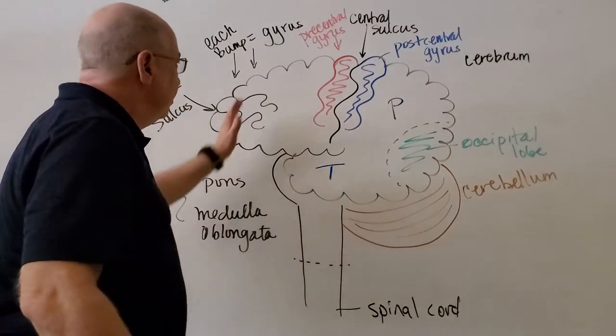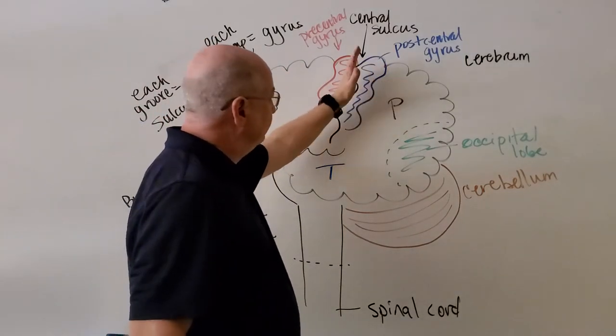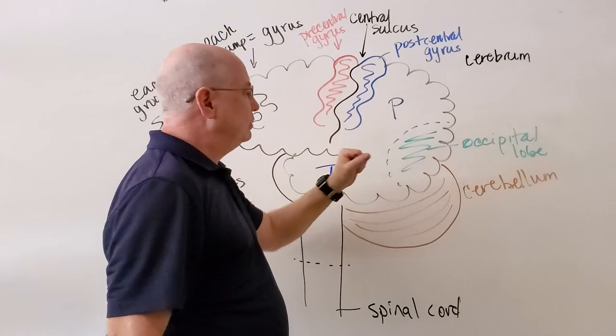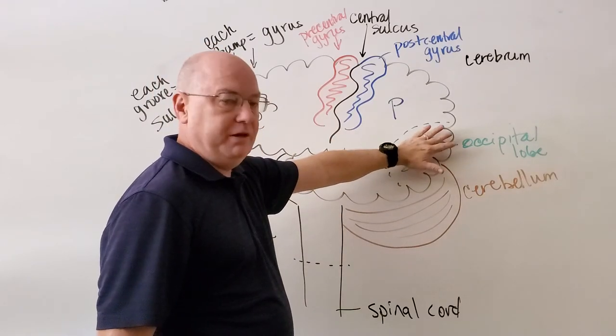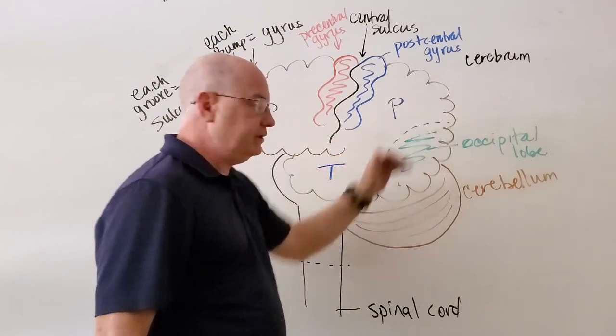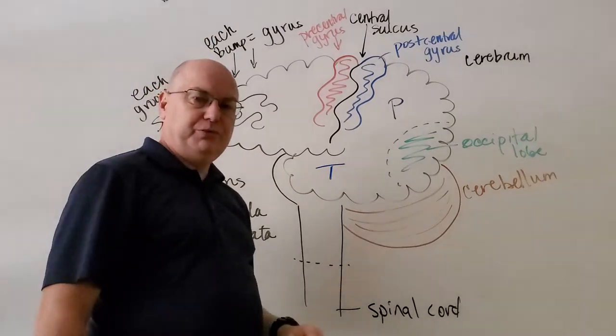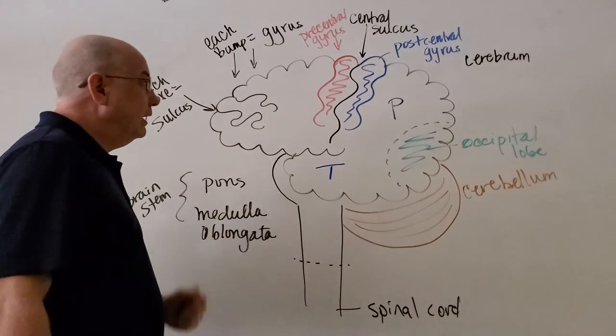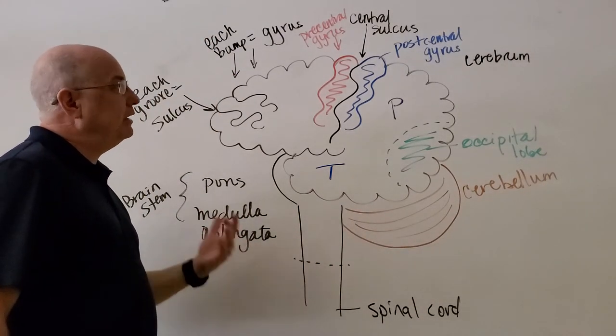So, I can see four lobes here, frontal, parietal, separated by the central sulcus, right above the cerebellum is a sort of dome-shaped area called the occipital lobe, and then there's the temporal lobe. Now, I want to cover one more thing before I get to the model.